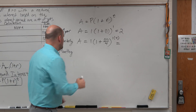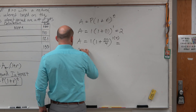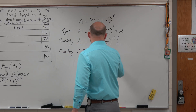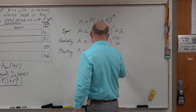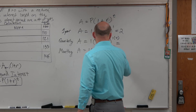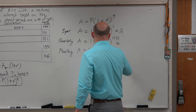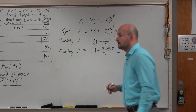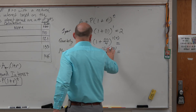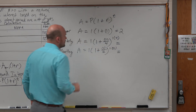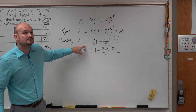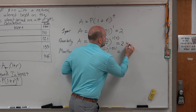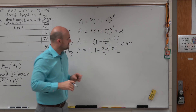For monthly, if we were going to do monthly, we'd say A equals 1 times 1 plus 1 divided by 12, raised to the 12. Did anybody get the quarterly? 2.44. Just give me the decimal — 2 decimal places is fine.